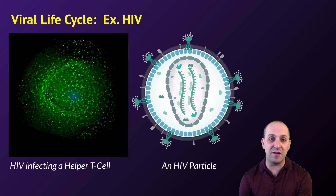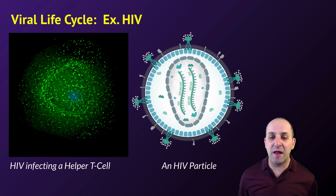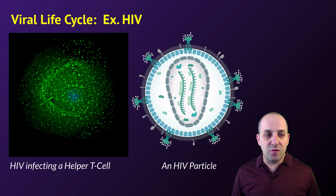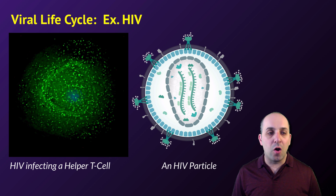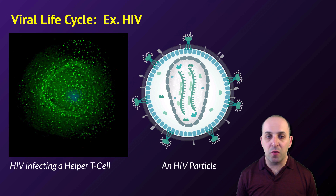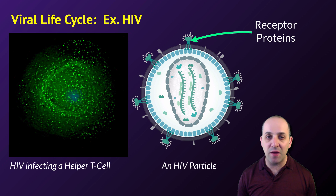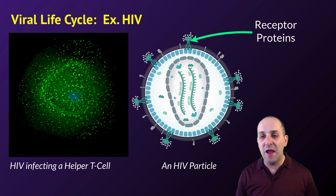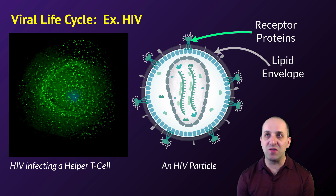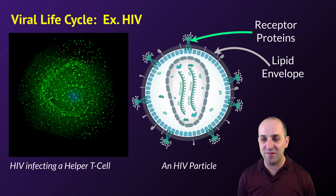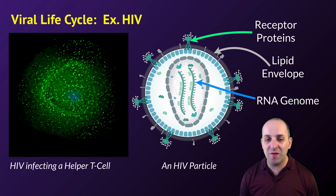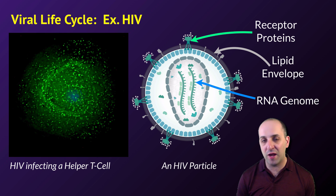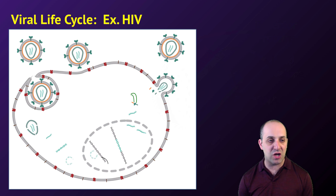Animal and eukaryotic cell viruses can be much more complex. A great example is HIV, which can cause acquired immune deficiency syndrome (AIDS). On the left of this graphic are HIV virions infecting a helper T-cell — the cell population they target. Looking at the HIV particle's anatomy, it has receptor proteins on the surface to help invade the cell, a lipid envelope (a modified phospholipid bilayer taken from a previously infected cell), an RNA genome, and additional enzymes packaged inside.